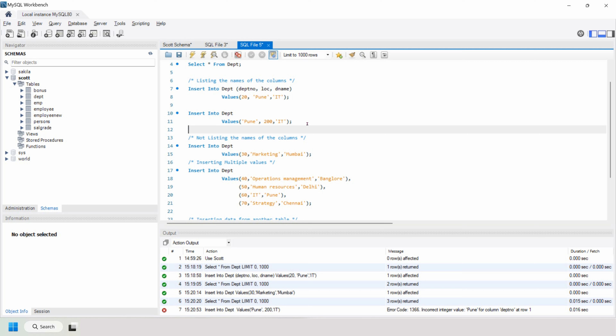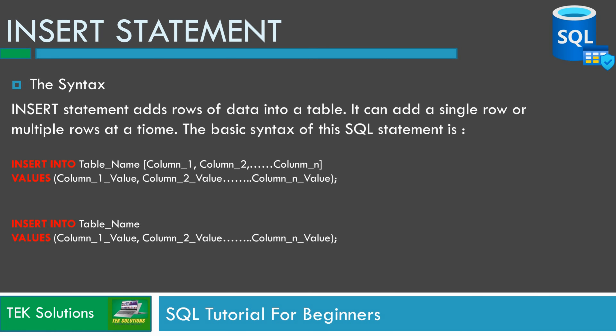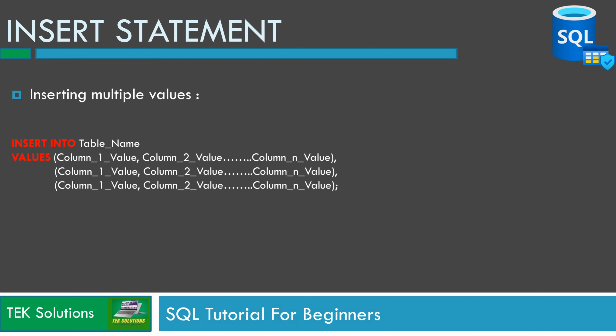Now let's move on — what if you want to insert multiple values in one single statement? For inserting multiple values, the syntax is INSERT INTO table_name, columns are optional, then VALUES followed by the first row values, comma, second row values, comma, third row values, and so on. This is how you can insert multiple rows into a table using one single statement.